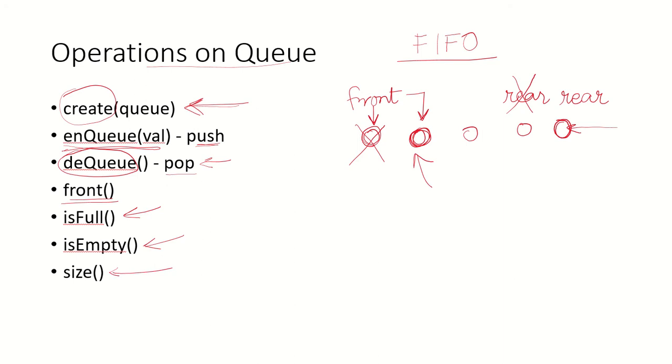Size of the queue represents the number of elements currently in the queue. These are only a few of the operations that can be performed. We can define and create more functions for various other operations in the queue.